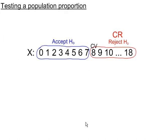As an example, if we're testing the population proportion and we have this acceptance region and this rejection region, the rejection region is based on the significance level. Let's see what would happen if we make the significance level smaller.